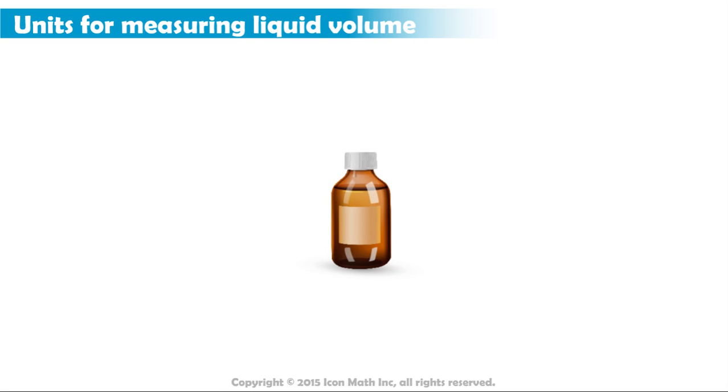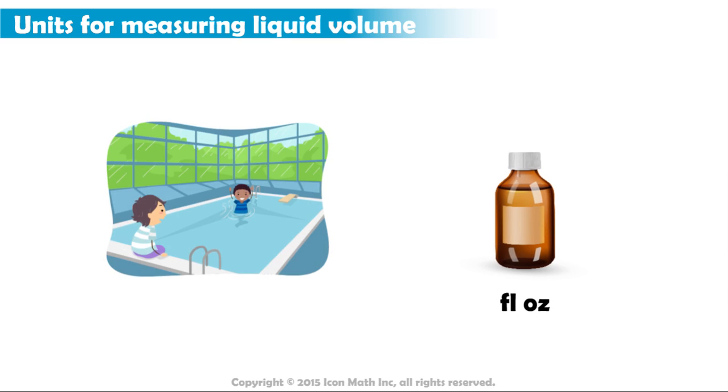To measure small things, such as the volume of a cough medicine, we use fluid ounces. And to measure the volume of a swimming pool, we would use gallons.